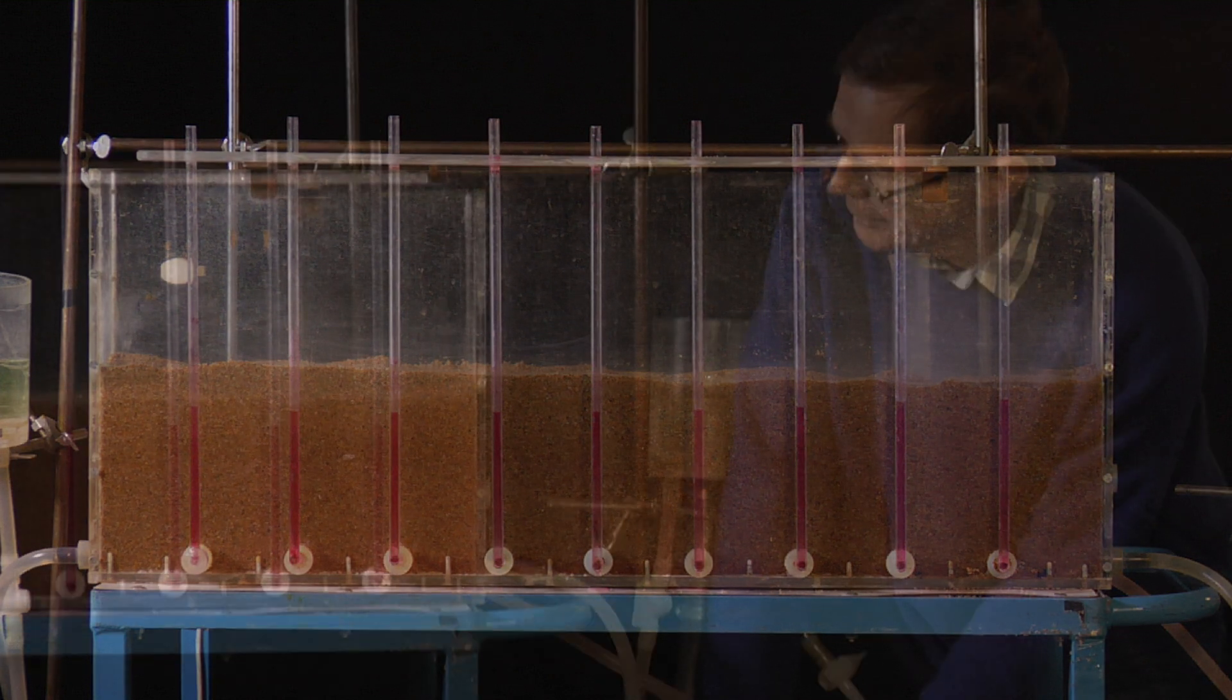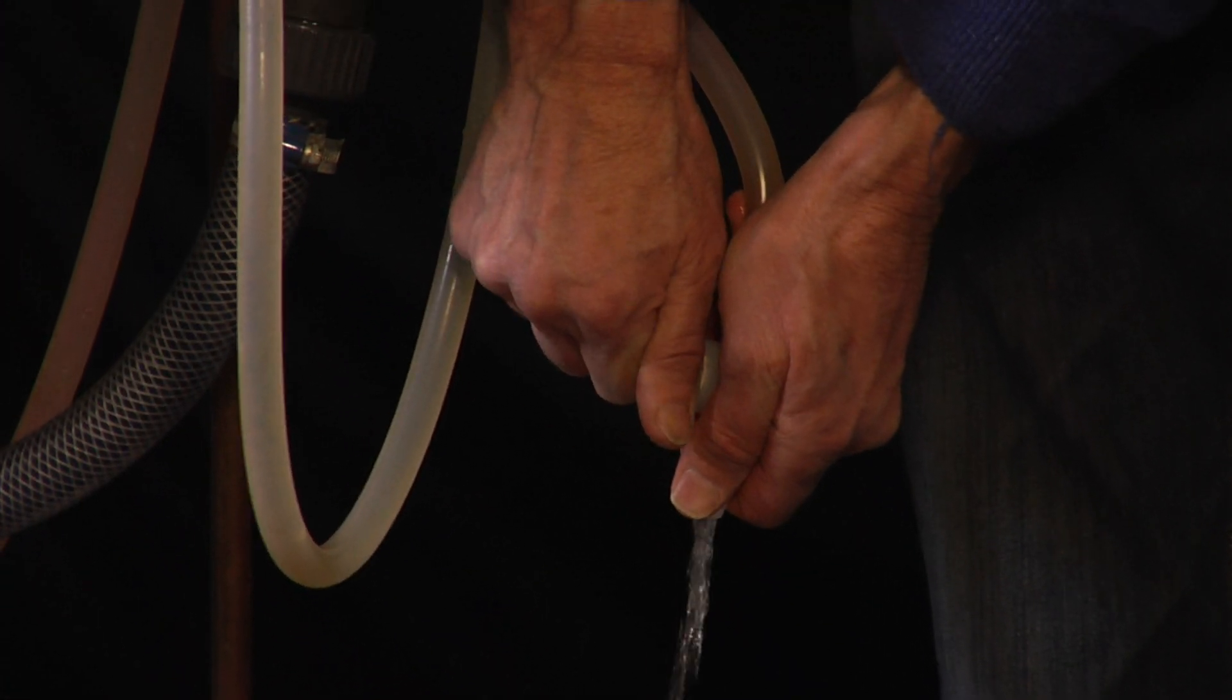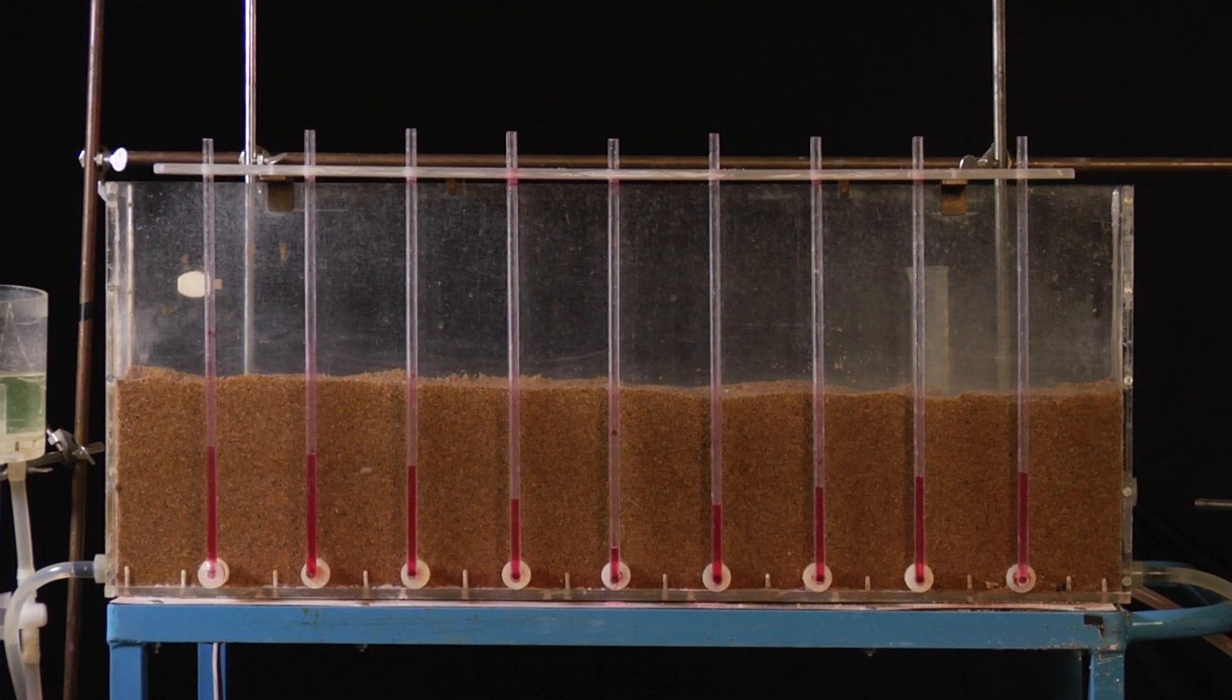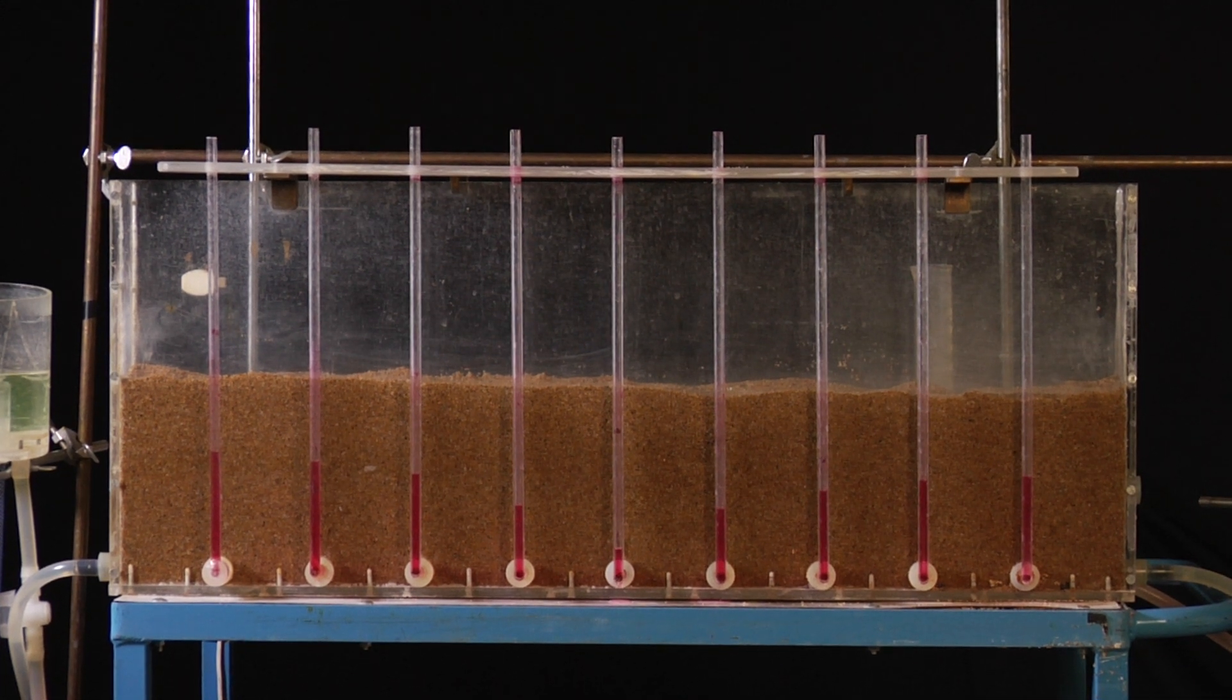In this model, I can create an impermeable boundary by closing the water supply completely on one side, which I now have done on the right side. Now the drawdown is larger on the right side since this side has no water supply.